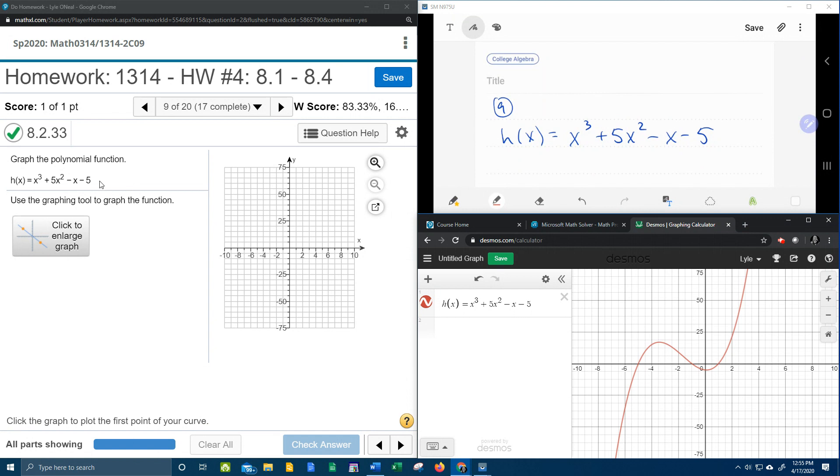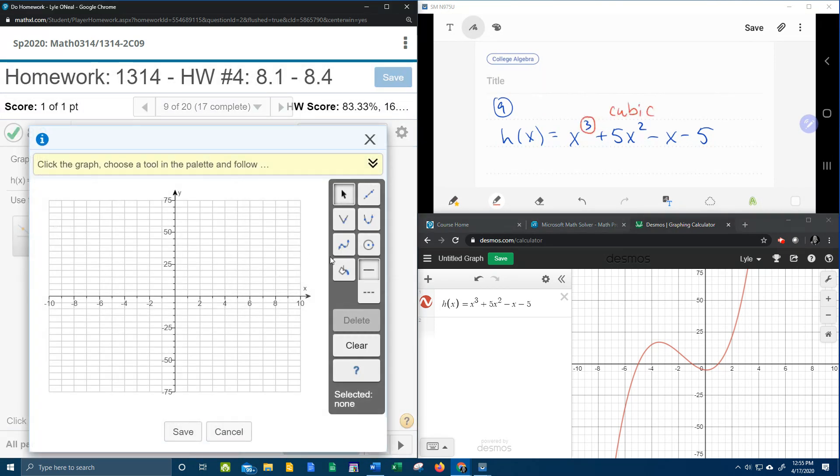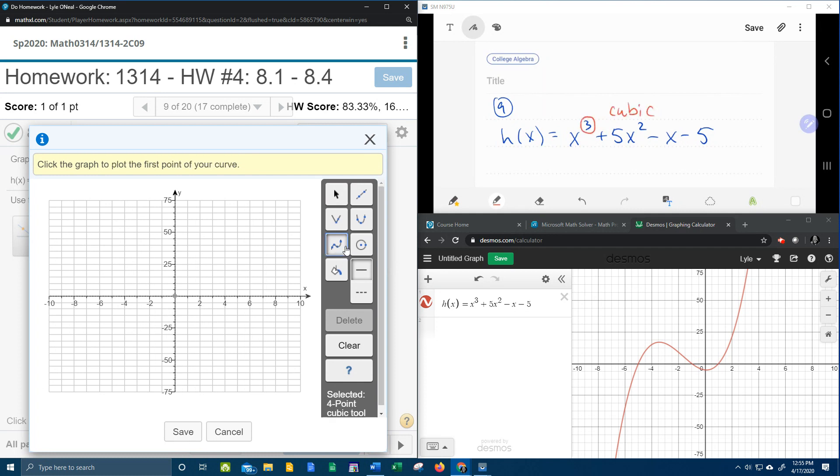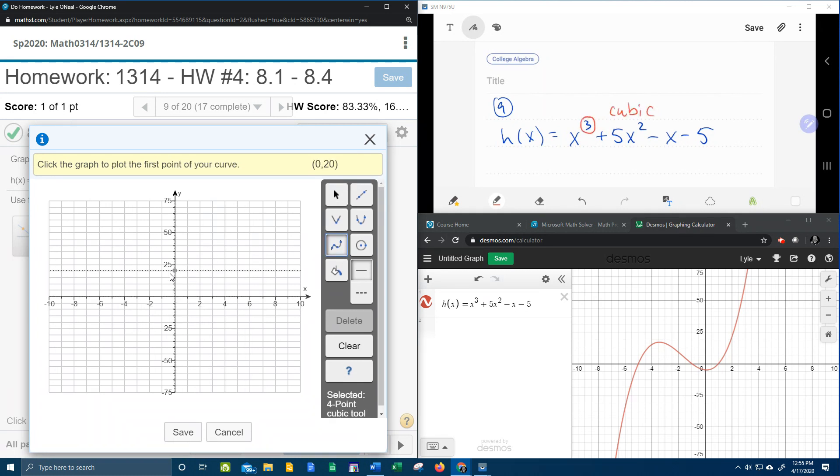It asks us to graph the polynomial function, and so here I've got my function written down. The first thing I notice is that this polynomial has a degree of three, which means that this function is cubic. So if I click to enlarge the graph, we're going to go here to the four-point cubic tool. Now since it's called the four-point cubic tool, that means we're going to need four points to graph.